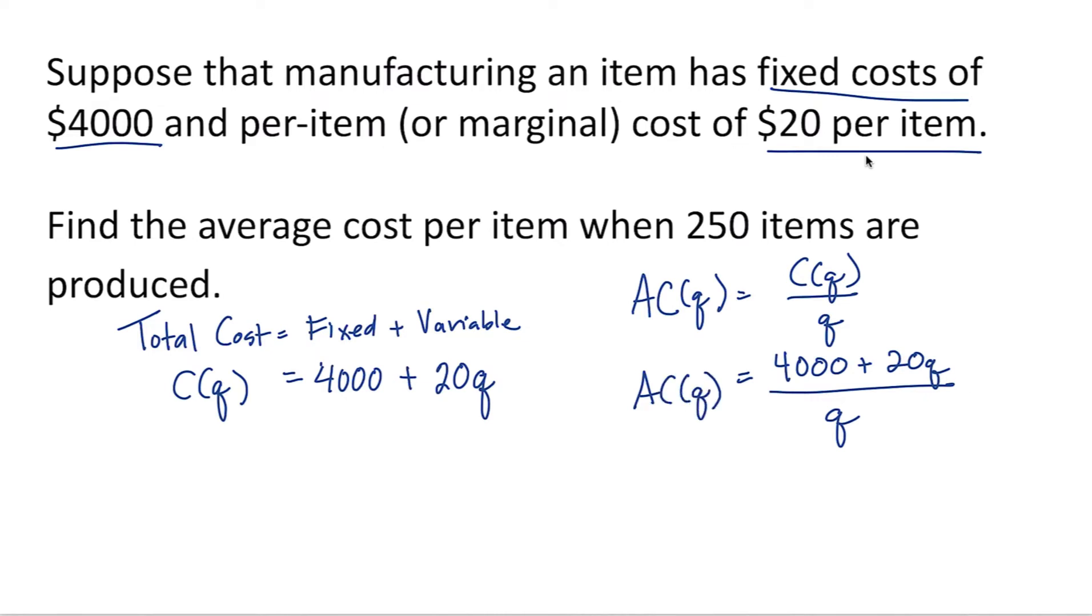Now we want to find the average cost when 250 items are produced. So let's find the average cost to produce 250 items by plugging 250 into our function. This will give us 4,000 plus 20 times 250, all divided by 250.